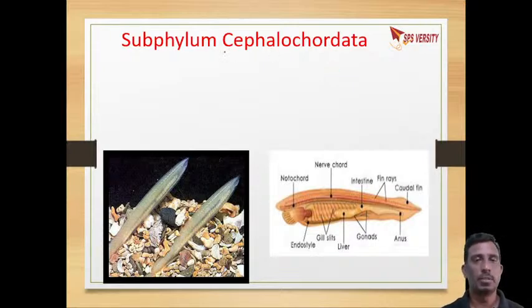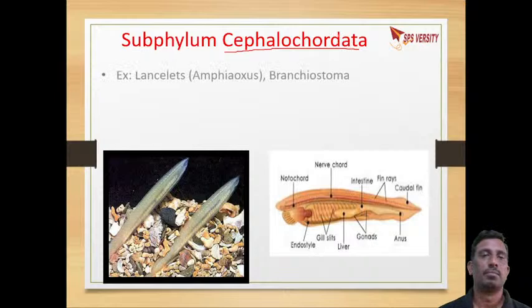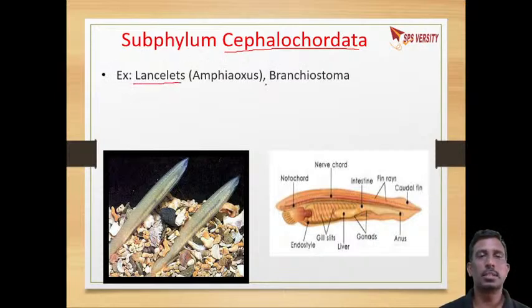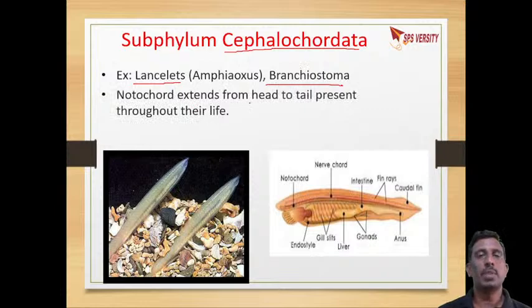The next phylum is Cephalochordata. Examples are Amphioxus, lancelets, and Branchiostoma. The notochord is present from head to tail throughout the life of the organism.